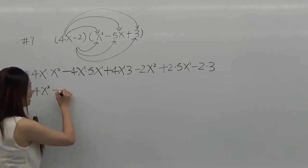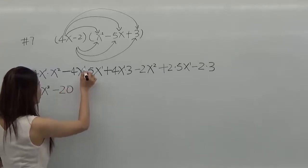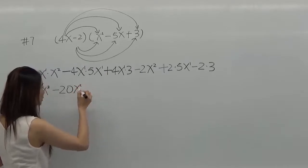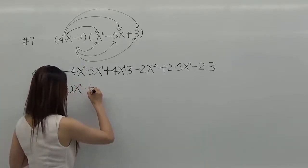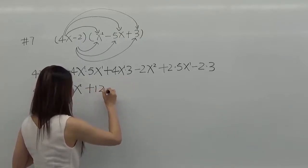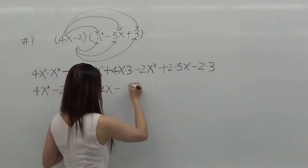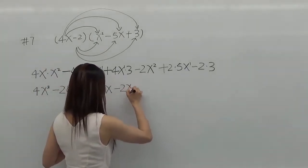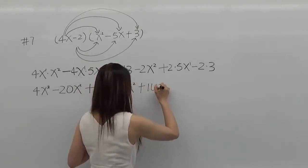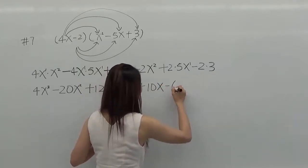Keep the same sign. 4 times 5 will be 20. 1 plus 1 will be 2, so it's 2x squared. Keep the sign. 4 times 3 will be 12x. Minus 2x, we keep it. Plus 2 times 5 will be 10x. And minus 2 times 3 will be 6.